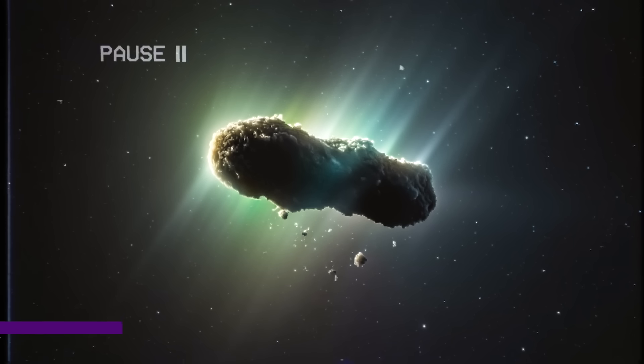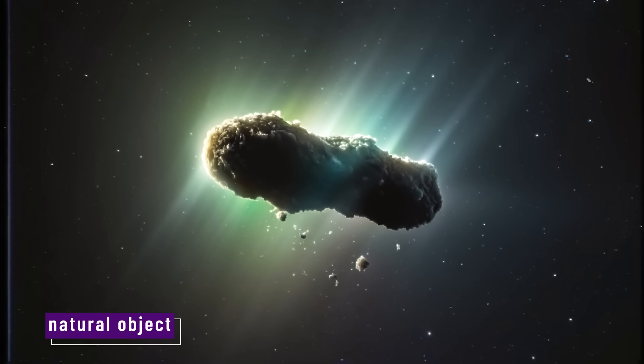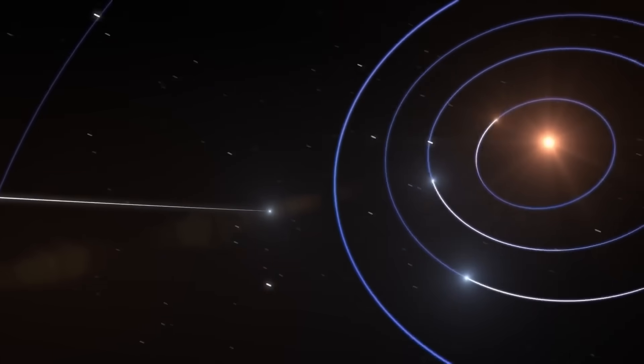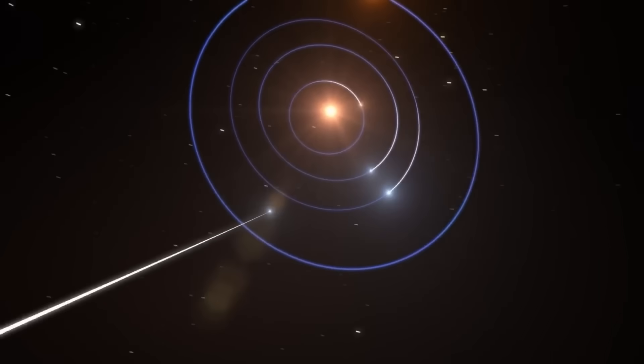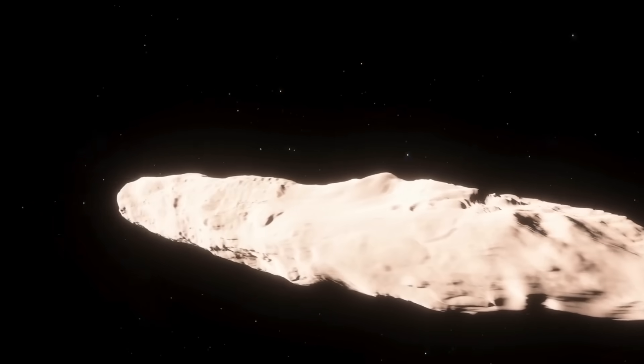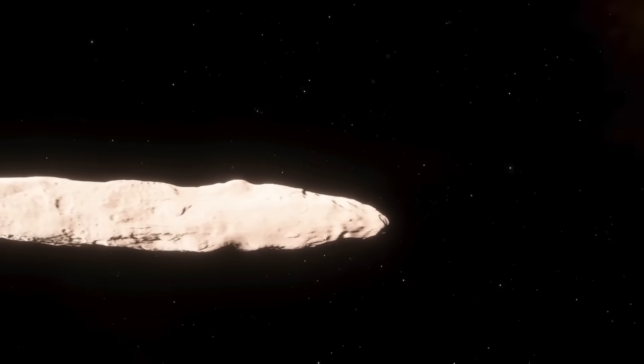3i/ATLAS is moving like a natural object, mostly. But some of its features defy easy explanation. It's shedding material far from the sun. Its path is too perfect. And its point of origin, from the galaxy's core, is deeply unusual.